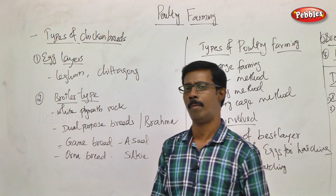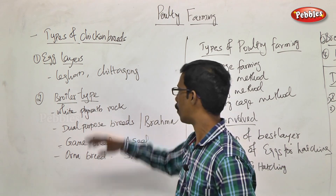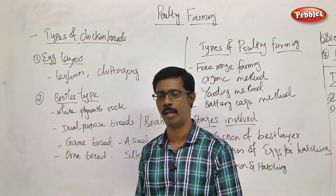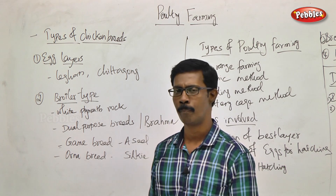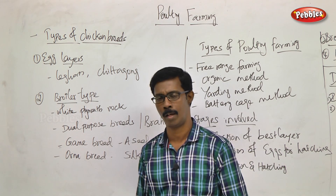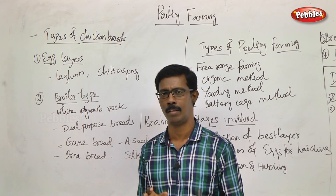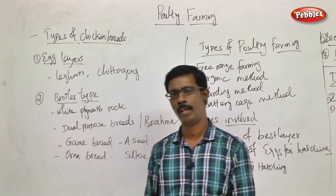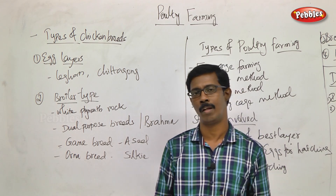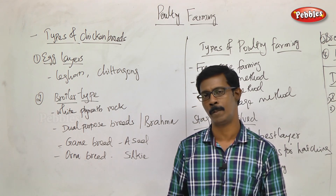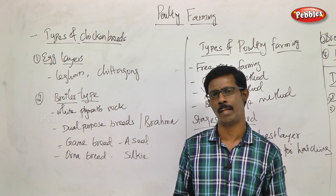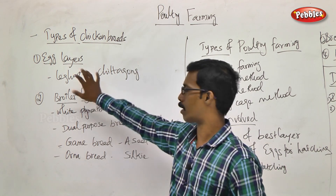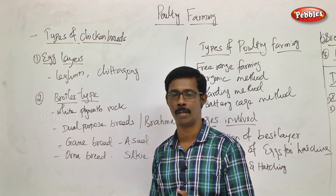We will talk about what types of chicken breeds there are — two major types. One is the egg layer type and the other is the broiler type. The egg layer is a good way to produce eggs. The advantage of the egg layer, compared to other types, is that it produces eggs in a short period. We are talking about the Leghorn type.